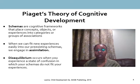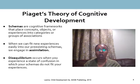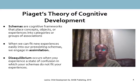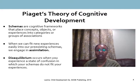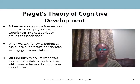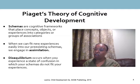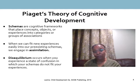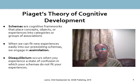Assimilation happens when we modify or change new information to help it fit into what we already know — the schema. It helps us maintain and add new information to what already exists in our mind. An example would be an infant using a sucking schema developed by sucking on a bottle or breast nipple, then attempting to suck on a larger bottle. They started with the breast, then moved to the bottle, assimilating in order to continue feeding and survive.